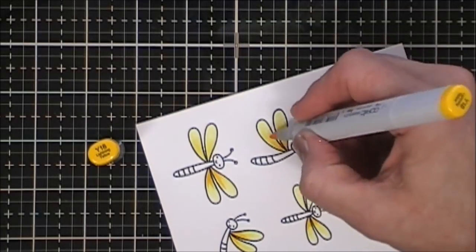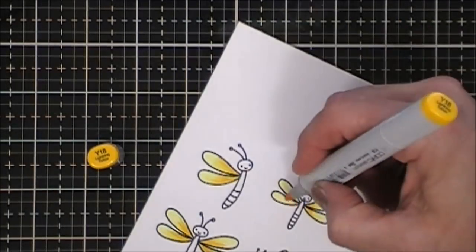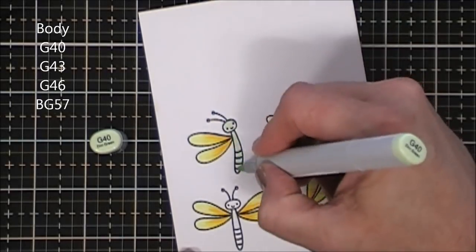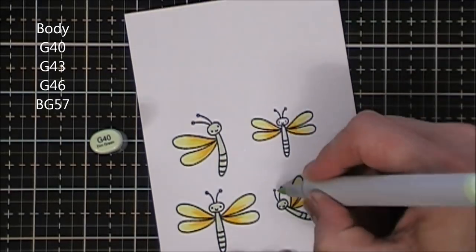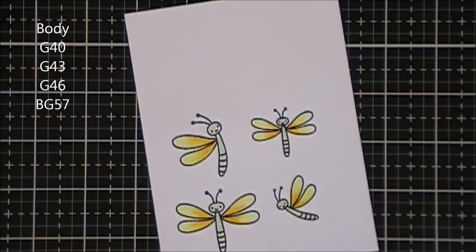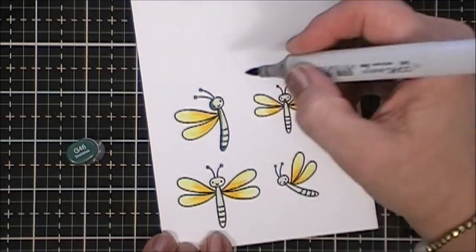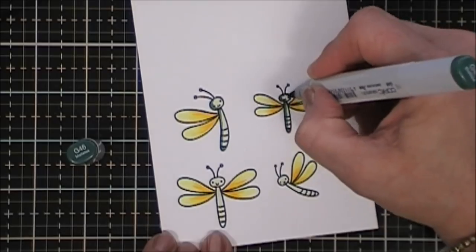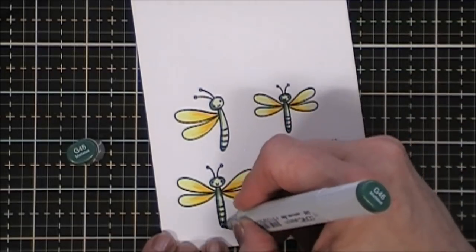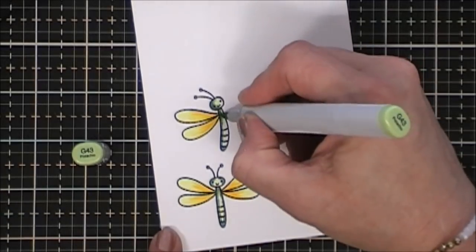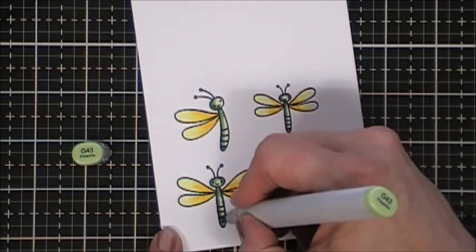And then for the little dragonfly bodies I chose some greens. Simple and easy coloring. I chose G40, G43, and G46, and then I striped the little dragonfly tails with my BG57.